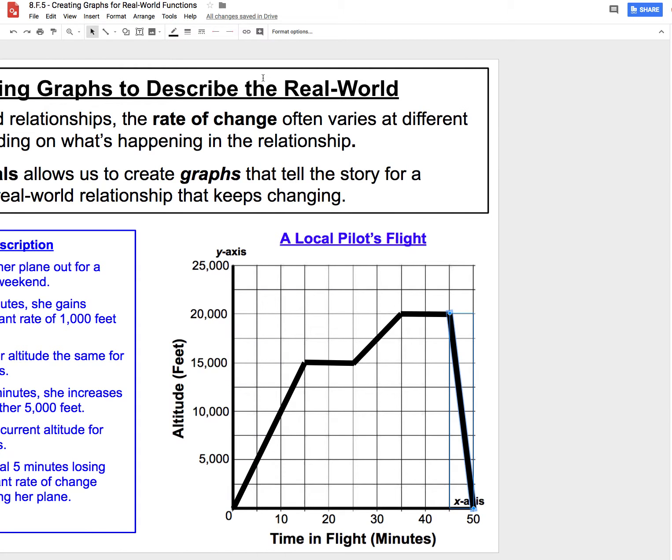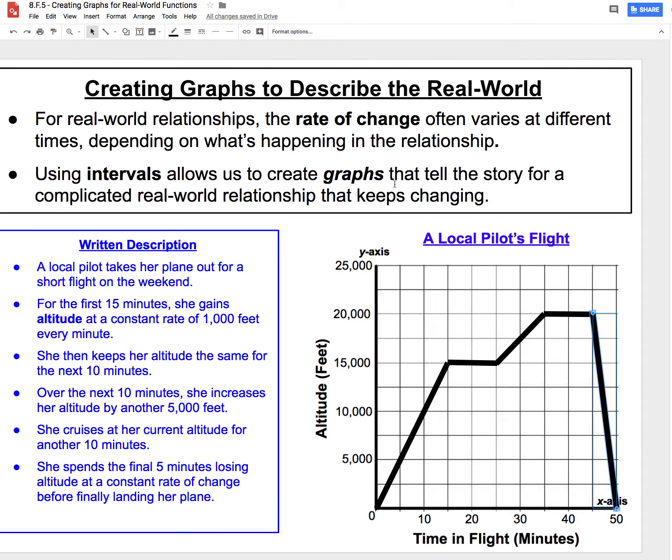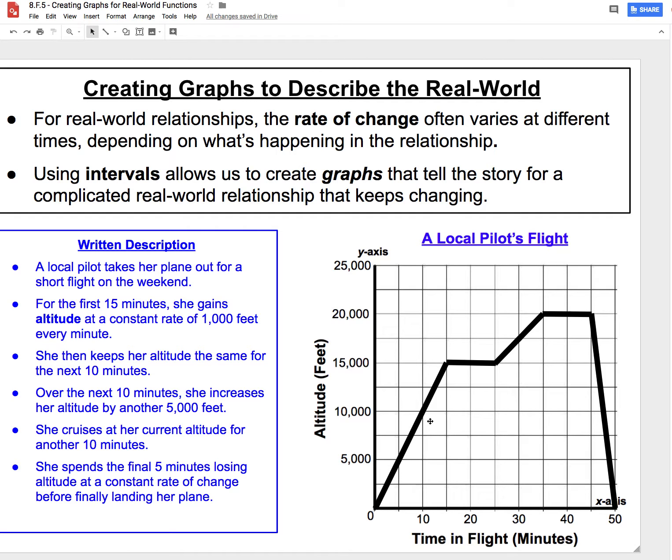CTRL, ALT, and MINUS zooms out in Google Drawings. And now I can see I have a graph with straight lines that tells the story of a local pilot's flight.